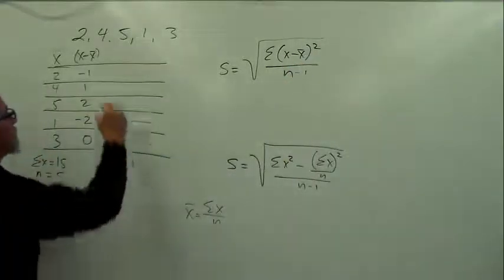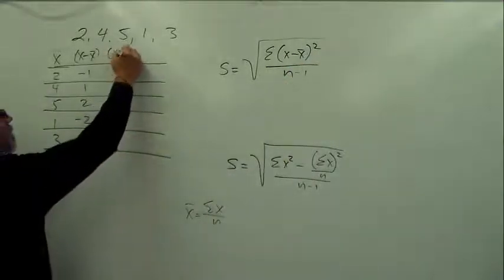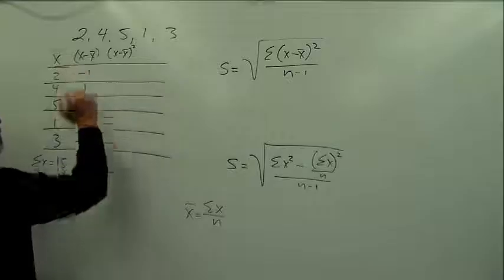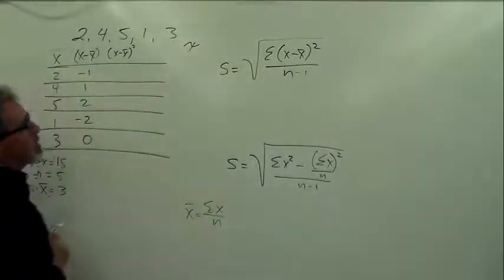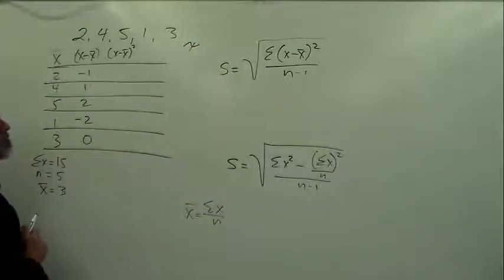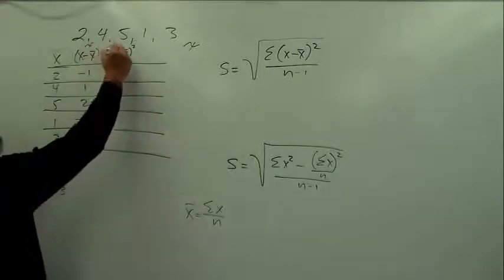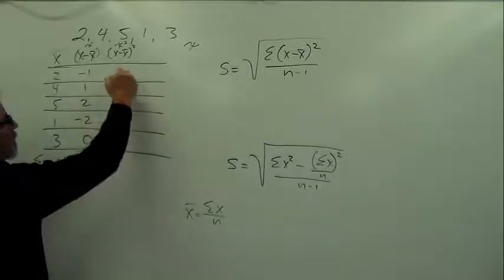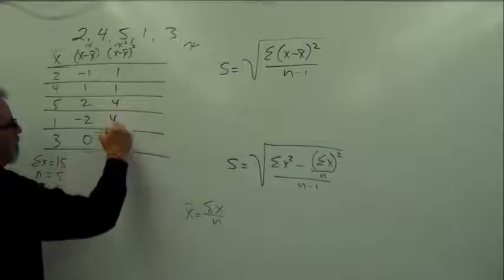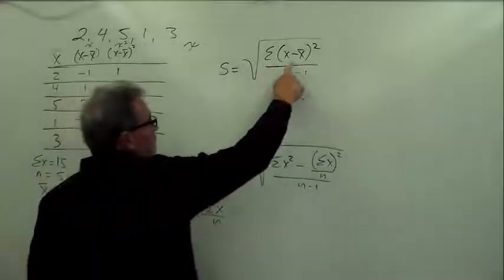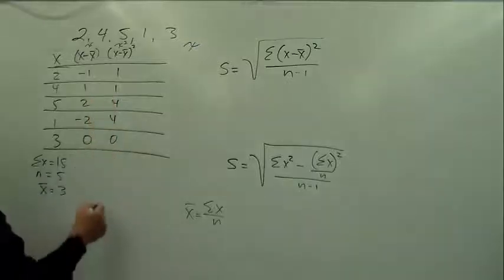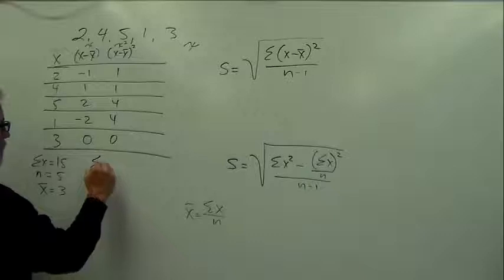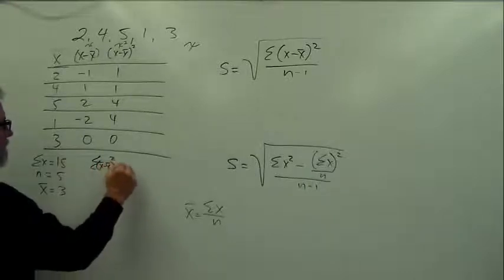Now it says to square them, please. So I'm going to make a little column here. This is called the deviation score right here. Deviates around the mean. It also is represented sometimes by little cursive x. So you have little cursive x right here and little cursive x squared right here. So now what we're going to do is square these values. Negative 1 times negative 1 is 1, 1, 4, 4, 0. So we have those values. Now it says to sum them up. And we're going to add them up: 8, 9, 10. So the sum of x minus x bar squared equals 10.